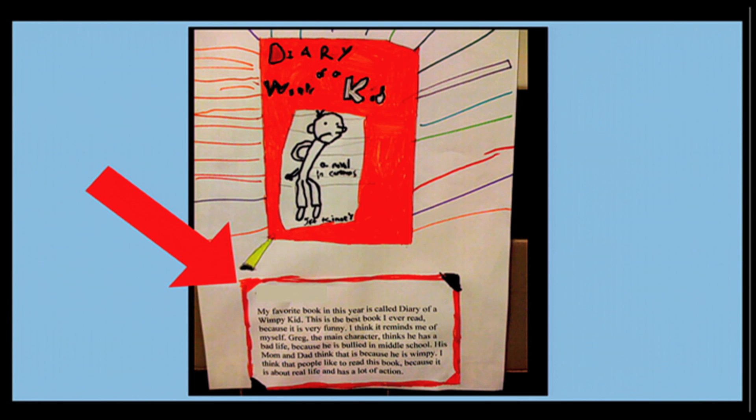Typically what a student would do in this assignment is they would draw the top part, they'd draw that book cover, and then down at the bottom, they would write out their paragraph. They would actually write out with pen and paper or pencil and paper, and they would post it to this. They'd turn that in.